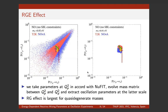Here are the results. For T2K and NOvA, the standard one-sigma regions are given in yellow and green respectively, with corresponding measurements shown as blue and red data points. The renormalization group effects are shown by scatter points that largely exceed the regions where standard oscillations exist. Note that this plot is on a log-log scale, so the effect can be quite significant.